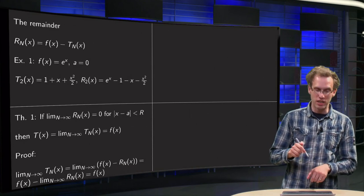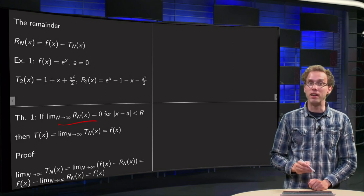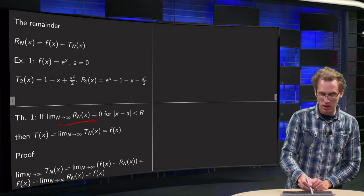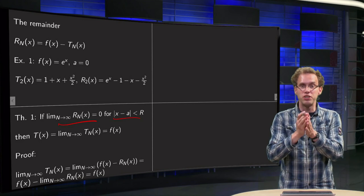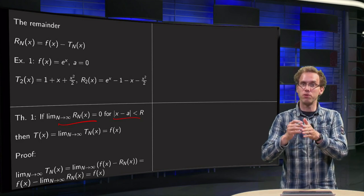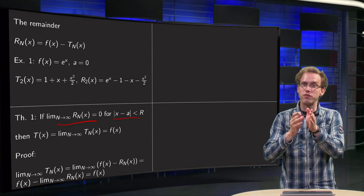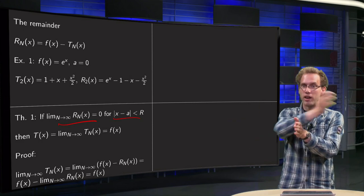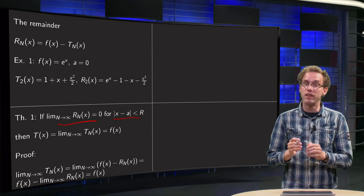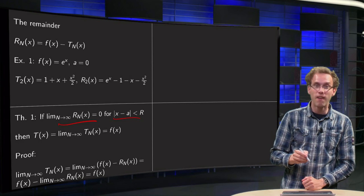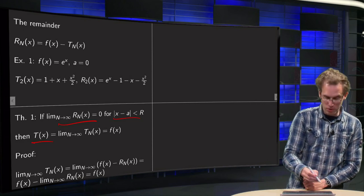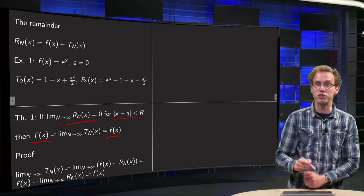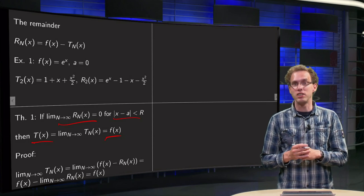First, a small theorem that says, if your remainder goes to 0, in some range your a is the center, and in the range where x is between a plus r and a minus r, so if the remainder goes to 0 in that range, then your Taylor polynomial equals your function f. That's really nice.